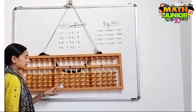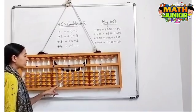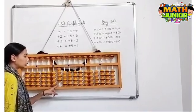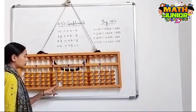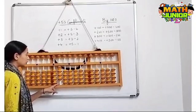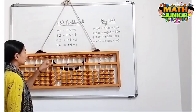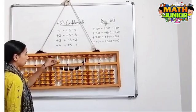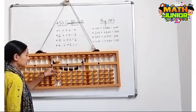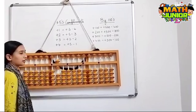Next, I have 400 here and I need to add 200, so the formula for plus 200 is plus 500 minus 300.